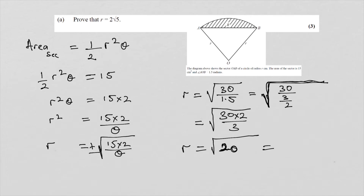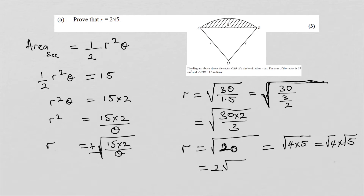The square root of 20 is root 4 times 5, which equals root 4 times root 5. Root 4 is 2, and root 5 is root 5, so R equals 2 root 5. And that's what we were meant to prove.